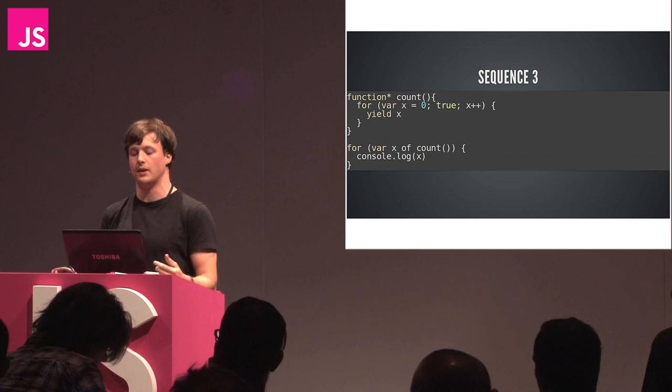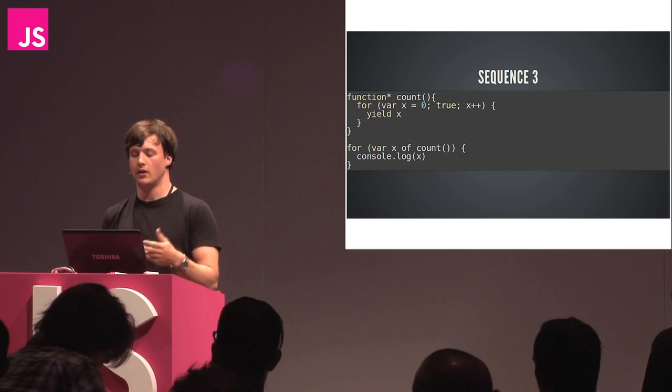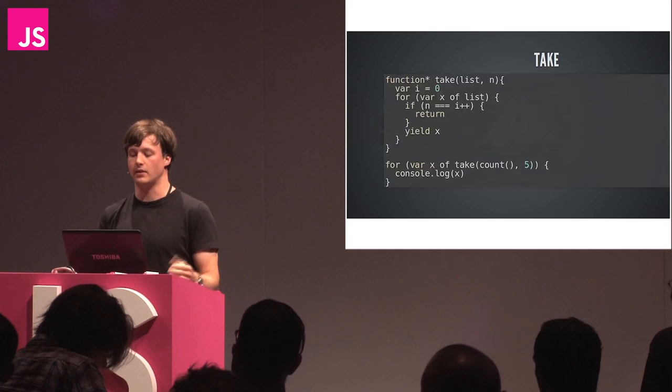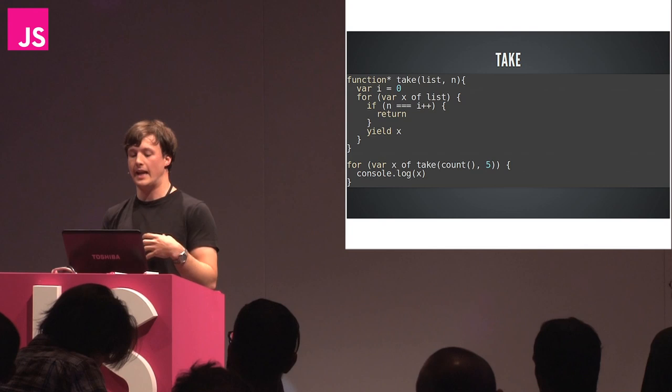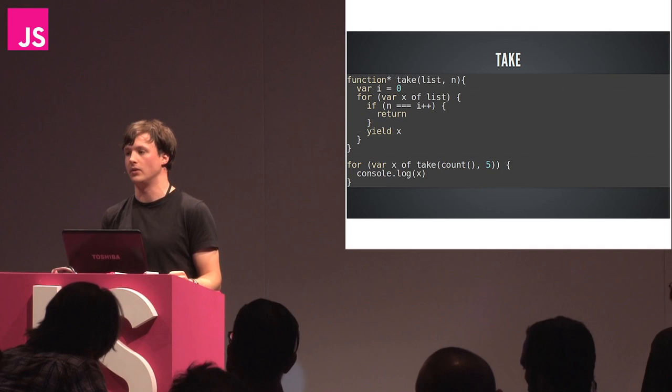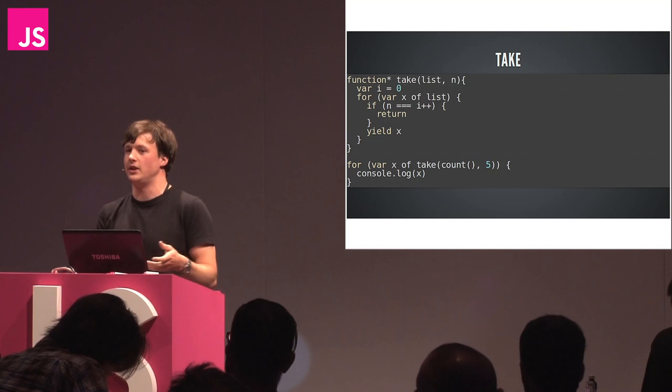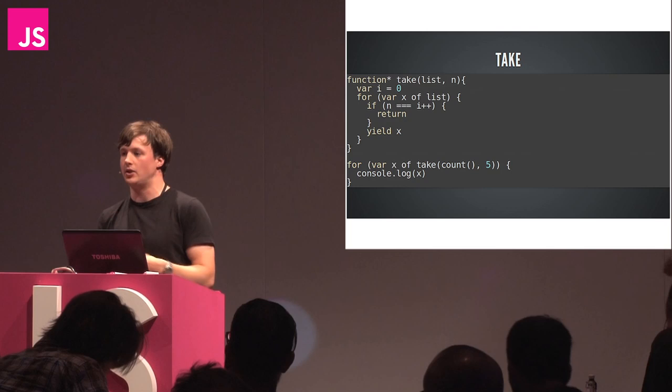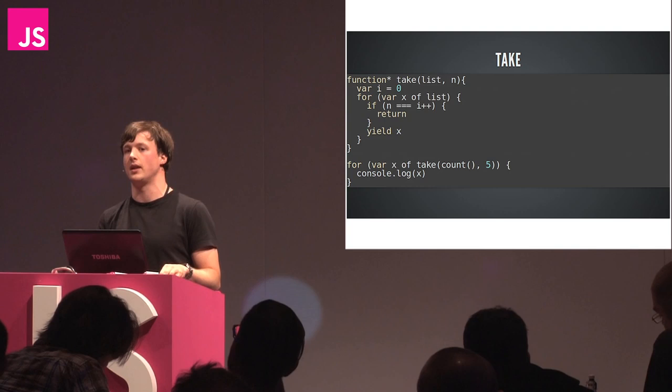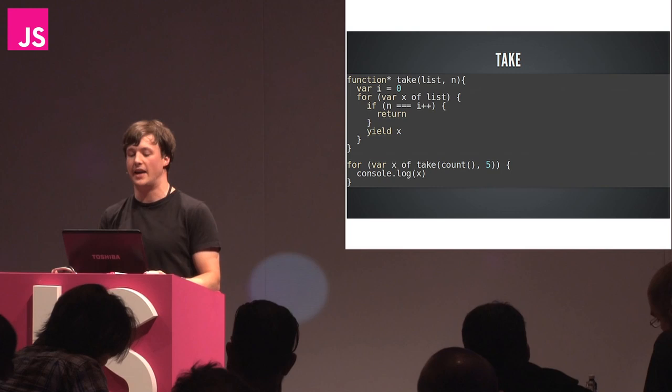When we ask for the second value, it resumes that function from where the yield keyword was and continues around the loop a second time. This is really useful for infinite sequences - this function represents all of the integers. We can still get back to the semantics we had before. We can write a simple take function that takes any infinite sequence and takes the first n items. This would work for integers, but you could equally pass the Fibonacci sequence. Because of the lazy nature of it, we could pull off the first five or ten items as needed.